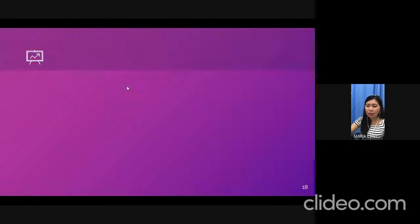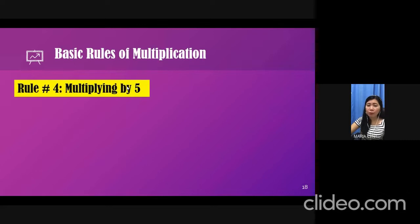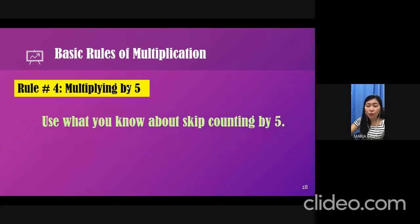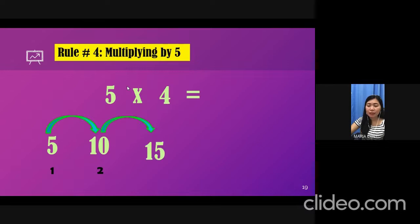Let's proceed to rule number 4, which is on multiplying by 5. Use what you know about skip counting by 5. For example, 5 times 4. Let's stop on the fourth term. Five, ten, fifteen, twenty. So, our fourth term is 20. So, the product is 20.